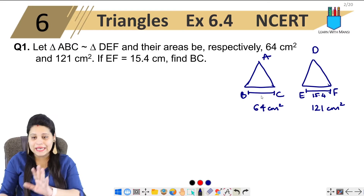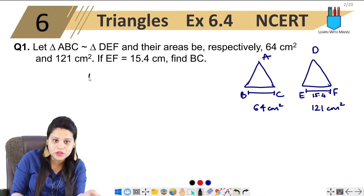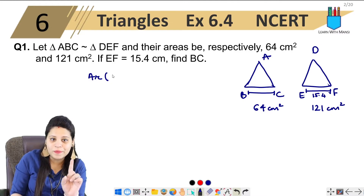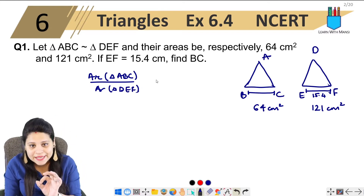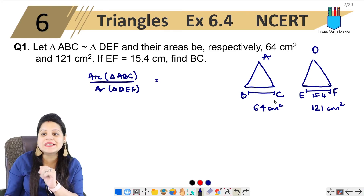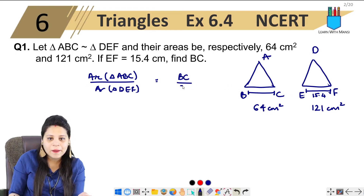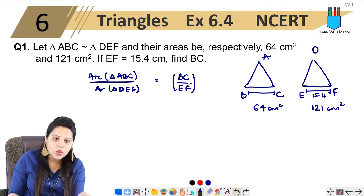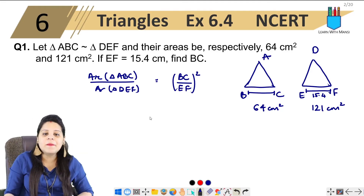These are two similar triangles. We know that if two triangles are similar, the ratio of their areas is equal to the square of the ratio of their corresponding sides. So, area of triangle ABC upon area of triangle DEF equals BC upon EF, whole square. We studied this theorem in the introduction.